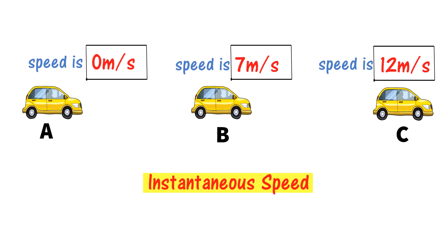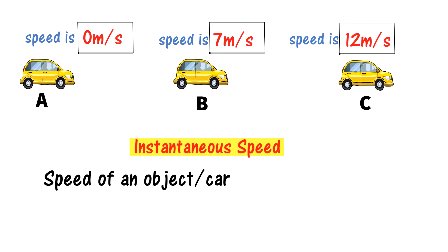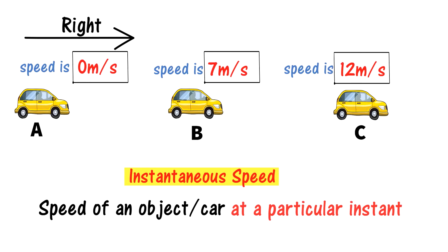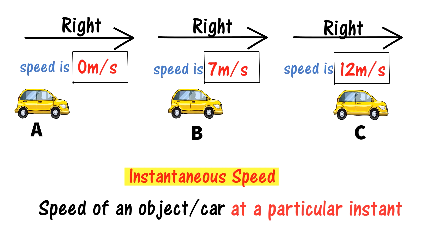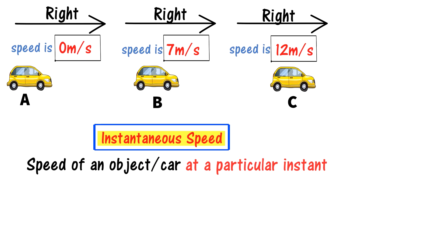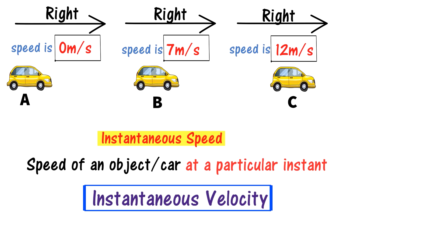How do we define instantaneous speed? It is the speed of an object at a particular instant. Now if we include direction — 0 meter per second toward right, 7 meter per second toward right, and 12 meter per second toward right — speed shifts to velocity. This is the instantaneous velocity, because speed combined with a specific direction gives us velocity.